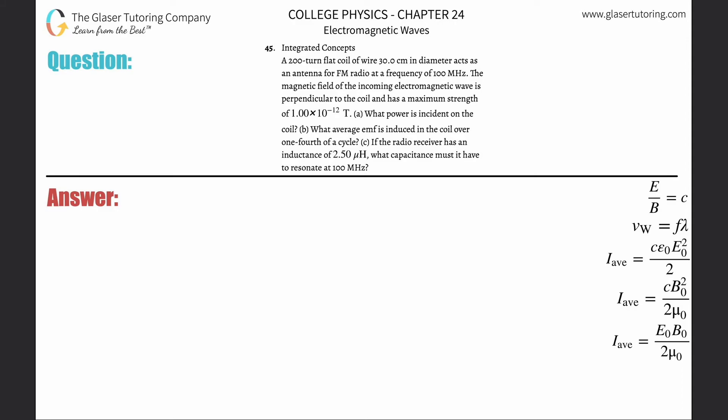Number 45, integrated concepts. A 200-turn flat coil of wire, 30 centimeters in diameter, acts as an antenna for an FM radio frequency of 100 megahertz. The magnetic field of the incoming electromagnetic wave is perpendicular to the coil at maximum strength of 1×10⁻¹² tesla.